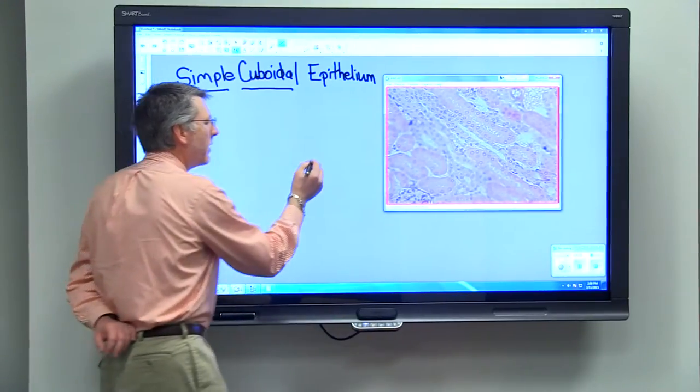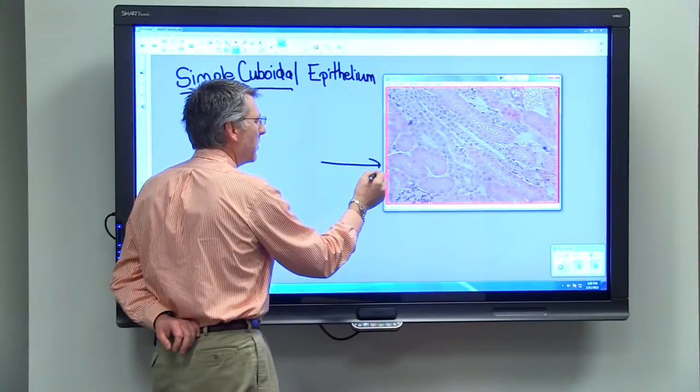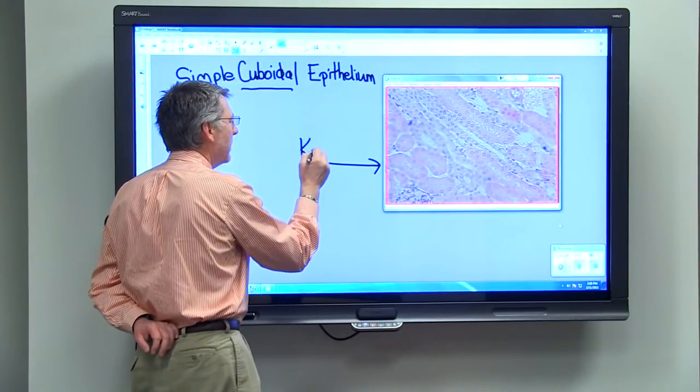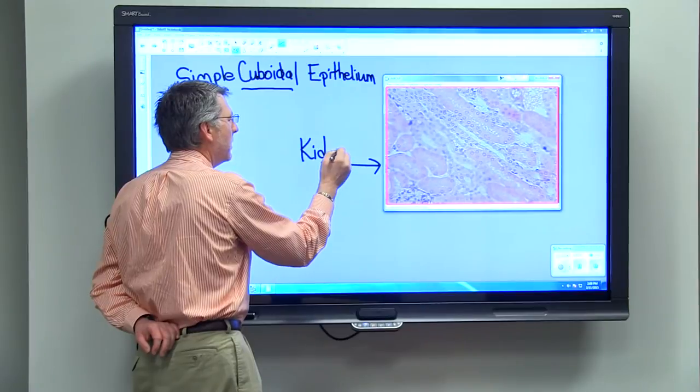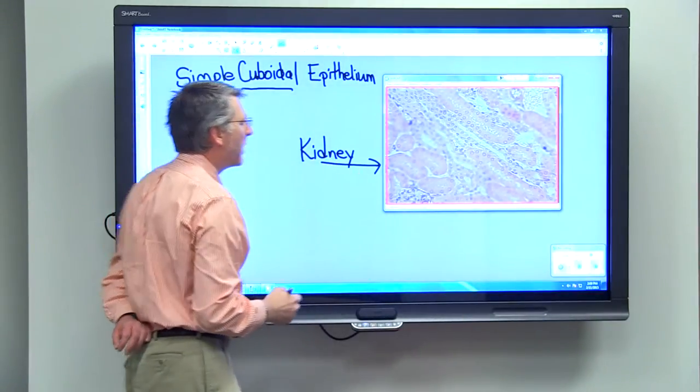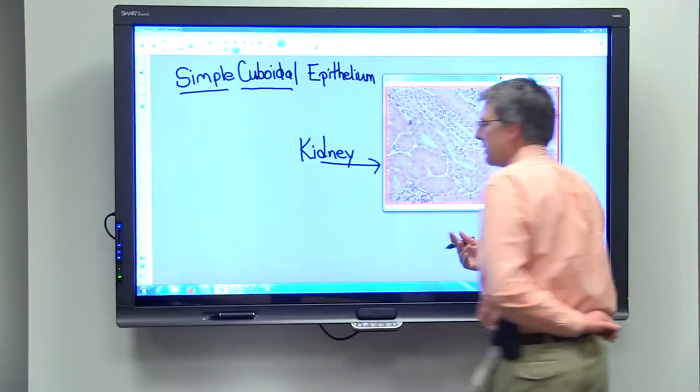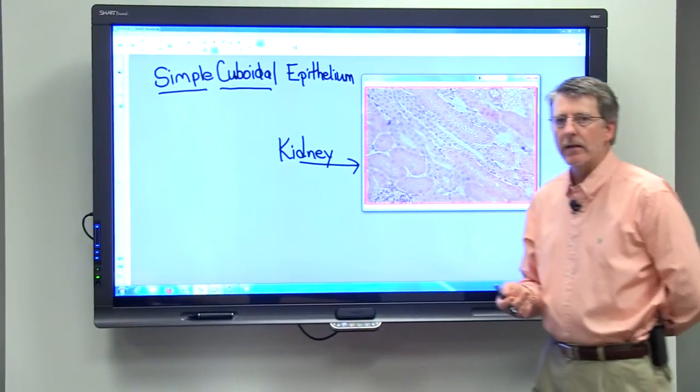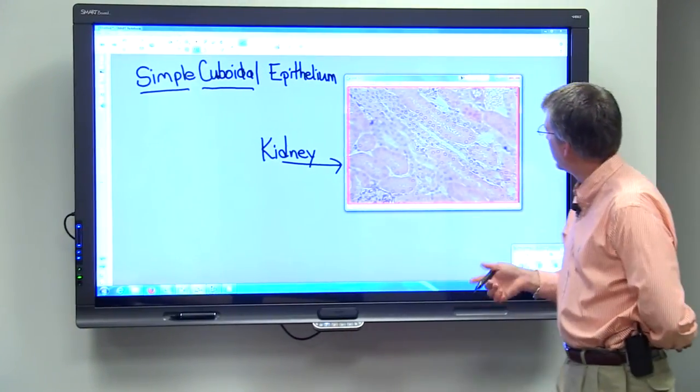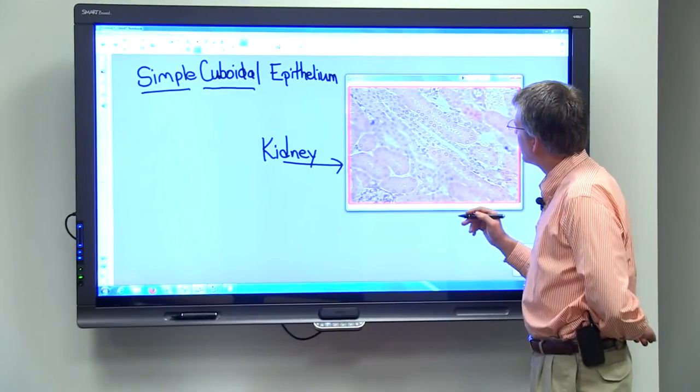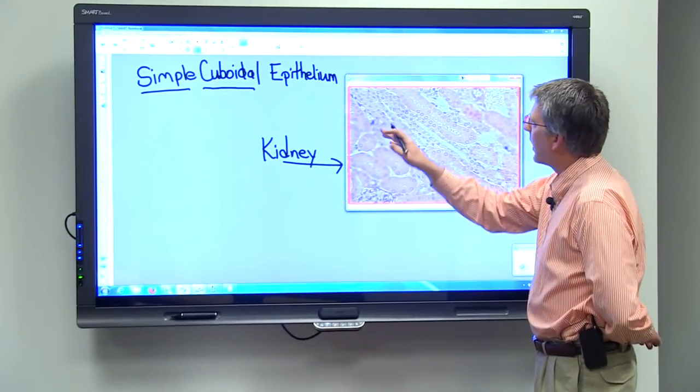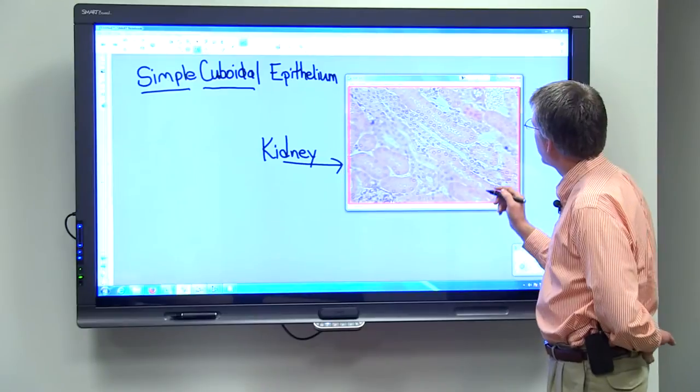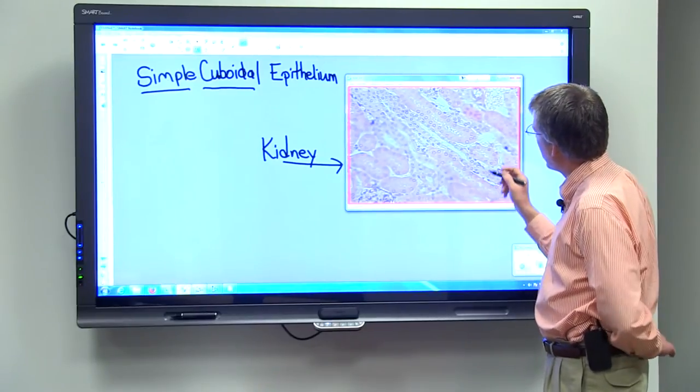So I have a microscope slide of a kidney, and the kidney of course has all sorts of little tubules that are involved with regulating the composition of the blood, and those tubules are made out of simple cuboidal epithelium. So I just want to point one out here.